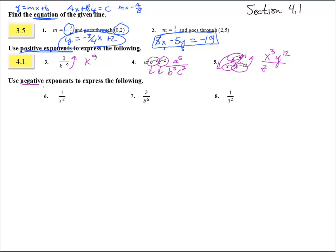This one says use negative exponents — we are not simplifying these, we are actually writing them as negative exponents. So we would write this as x to the negative 2, because that's what would put that term in the denominator. This one, the 3 stays, and b becomes b to the negative 5 — again, that's what would put it in the denominator. And this one would be 1 times 4 to the negative 2 power, so that's 1 over 16. Reminder: this is not negative 16. The negative exponent doesn't make a negative number — it only makes a fraction.